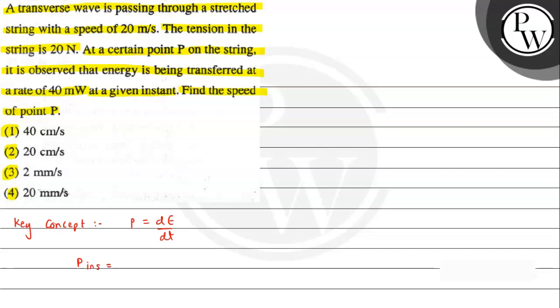It is given by the expression A squared omega squared mu v cosine squared of omega t minus kx. Since it is a harmonic function, we have used the same equation as the displacement. We derived this expression y equals A sine of omega t minus kx. That is the progressive wave equation.